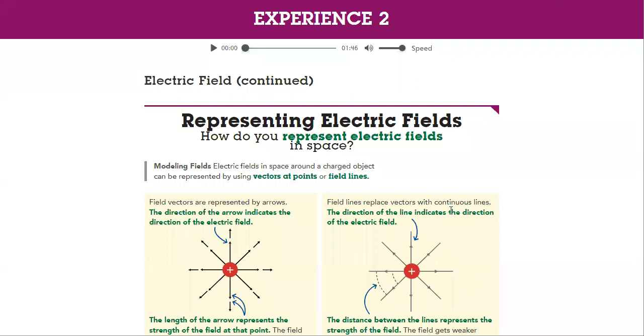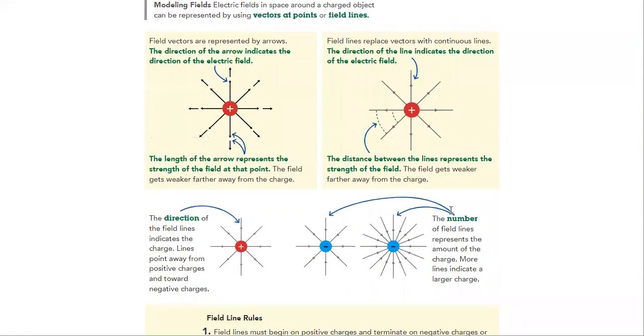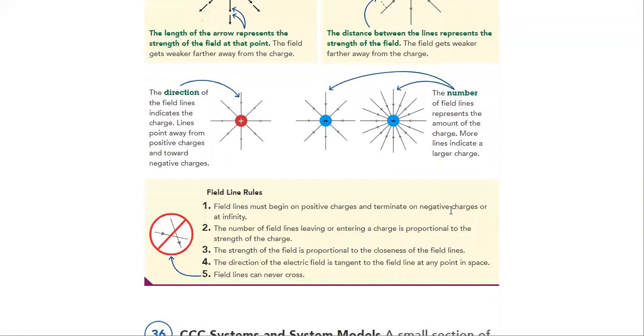Then, we will learn what's the difference between electric field, how to represent it in space. Electric field, the direction from positively charged and negatively charged. From positively charged, it goes outward. And for the negatively charged, it goes inward.